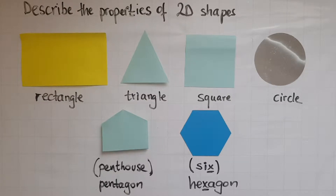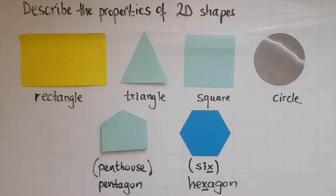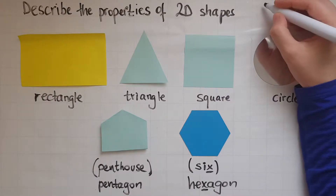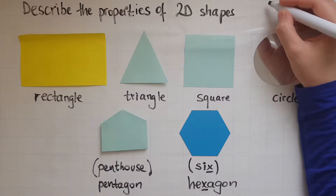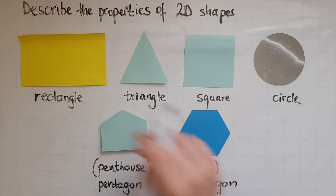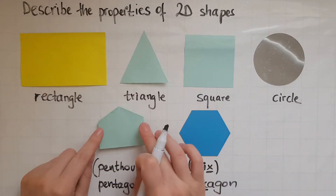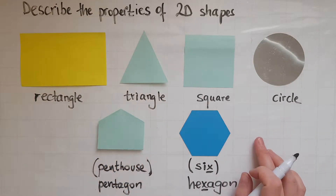In this video we'll look at describing the properties of 2D shapes. What we'll look at is the sides, corners and angles. So we'll try and describe the sides, corners and angles for each of these shapes.